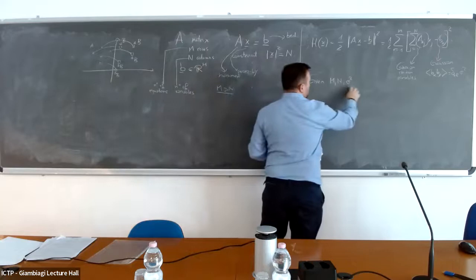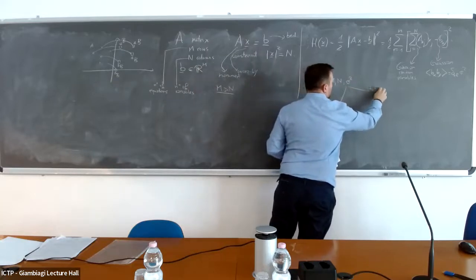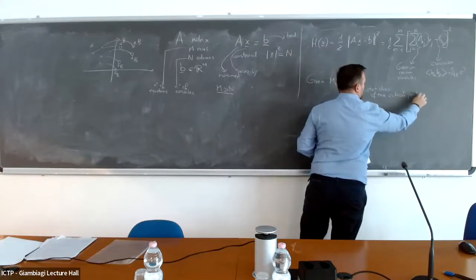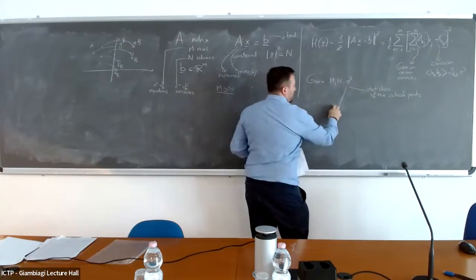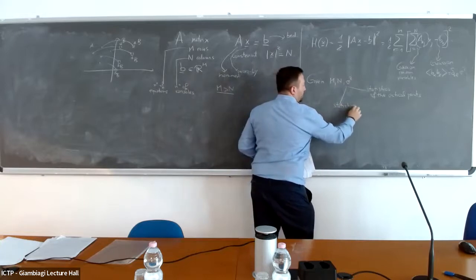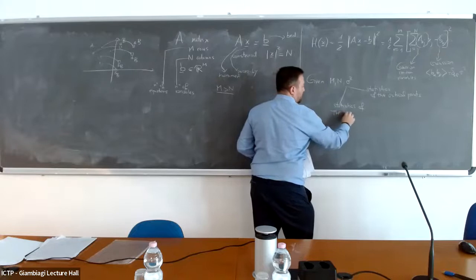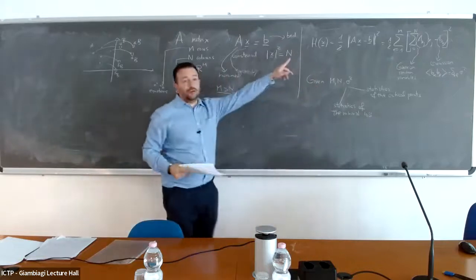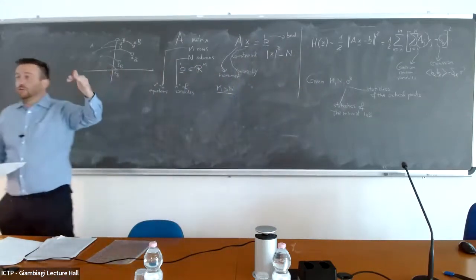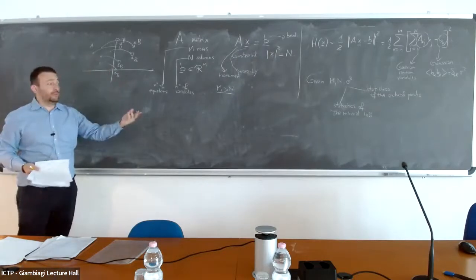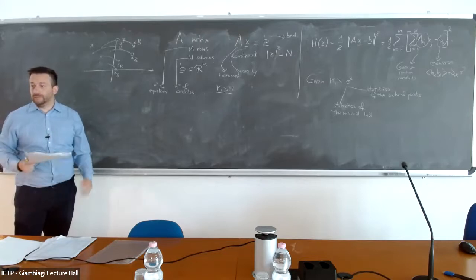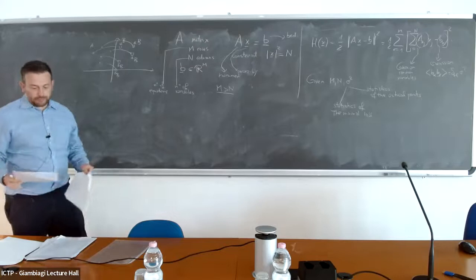Given m, n, and σ², we are interested in two objects: first, the statistics of the critical points; and second, the statistics of the minimal loss. The minimal loss is zero if the system can be solved and larger than zero if it cannot, but we want to understand how close we are to solving it exactly.